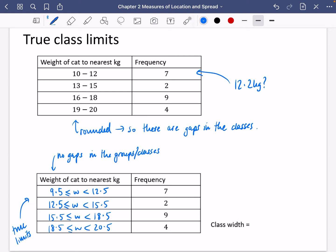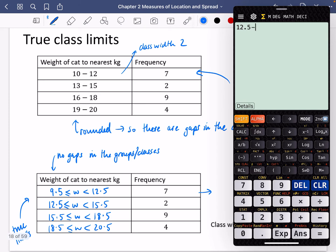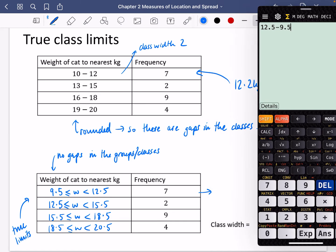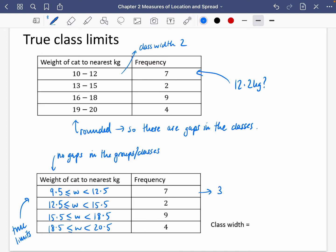So let's talk about the class widths of these as well, because I think if you thought about the class widths of these ones, I think you'd say this had a class width of 2. But when you look at the class width of this one, it's going to be 12.5 minus 9.5. So the class width is actually 3 for this one. The class width for all of them is actually going to be 3. It just doesn't look that it's going to be like that.